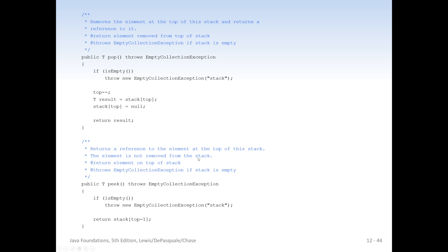Here's our peek function — again it throws an EmptyCollectionException, because we assume the stack isn't empty when you call this; in fact you should check isEmpty first before calling peek. If the stack is empty we throw the exception, otherwise we return stack[top - 1], which is the first valid element — the top of the stack. Peek is pretty straightforward to implement.